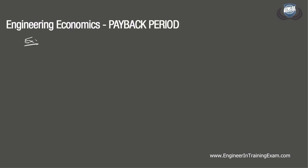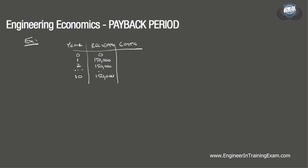So let's run through an example. A construction project has the following cash flow. The columns are the year, the cash receipts, and the costs. The period is 10 years: 0, 1, 2, all the way through 10. Cash receipts are $150,000 in the first year, running all the way through year 10. The initial cost is $1,000,000, and the cost thereafter is $40,000, running from year 1 through year 10. So what will the payback period be for this investment?